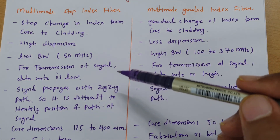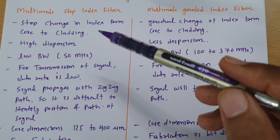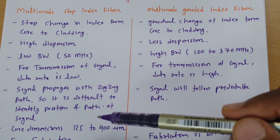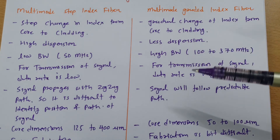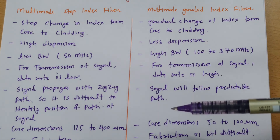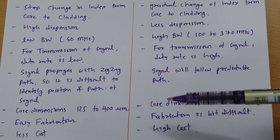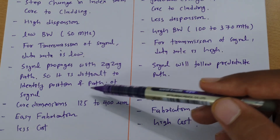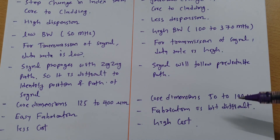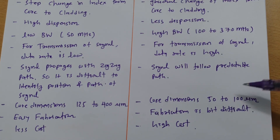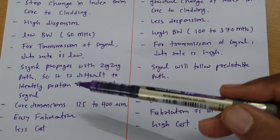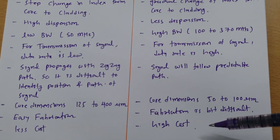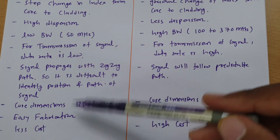Signal propagation in Step Index is by zigzag path, making it very difficult to identify the position and path of signal. In Graded Index Fibre, signal follows a predictable path, so mathematical calculations can be applied. Core dimension of Multi-mode Step Index ranges from 125 to 400 micrometers, while for Multi-mode Graded Index it ranges from 50 to 100 micrometers. Fabrication is easy and cost is low for Step Index, while fabrication is more difficult and cost is high for Graded Index.